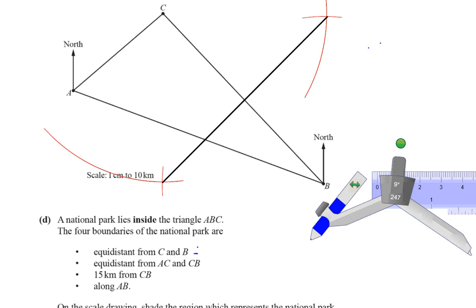Next it says equidistant from AC and CB. When you have to find points equidistant from two intersecting straight lines, you are looking for what's called the angle bisector. You want to bisect angle ACB — cut this angle into two equal halves — so we'll use the compass again to do so.